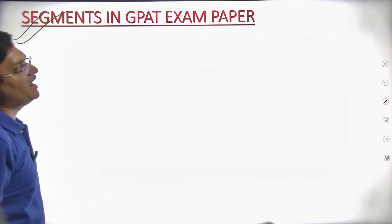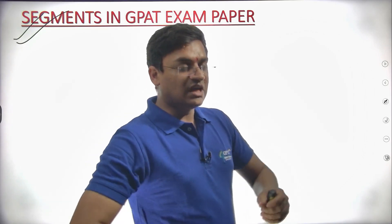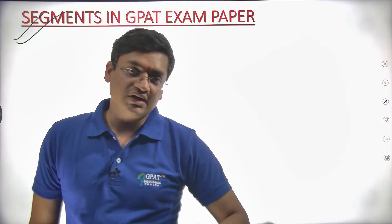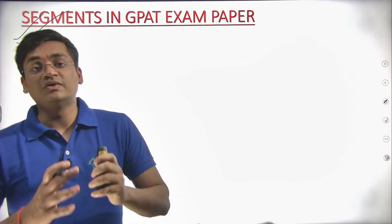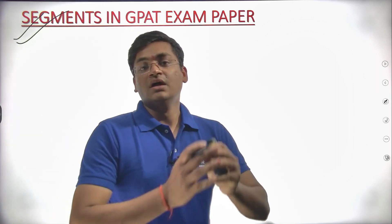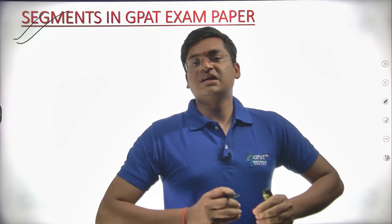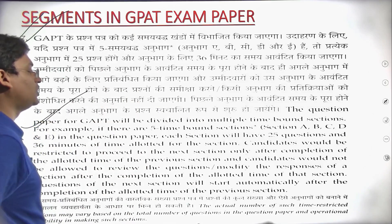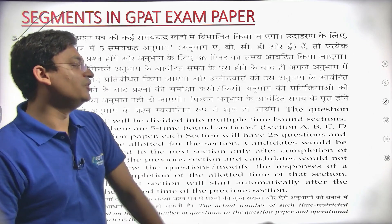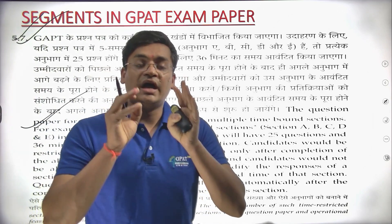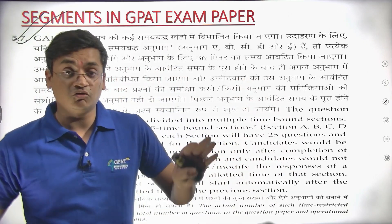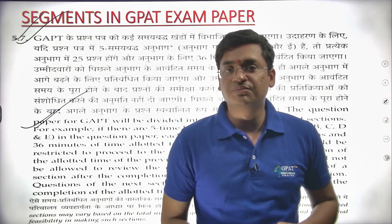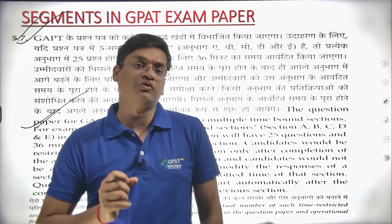Next, segments in the GPAT exam paper. This is the first time we are going to see a segment-wise exam pattern. GPAT has 125 questions as you all know, and these 125 questions are divided into 5 segments — sections A, B, C, D, E — each having 25 questions. For each 25-question segment you will be getting 36 minutes, and within those 36 minutes you have to solve all 25 questions.